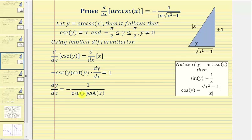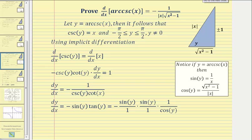Because one over cosecant y equals sine y, and one over cotangent y equals tangent y, we can write dy/dx as negative sine y times tangent y. Since tangent y equals sine y over cosine y, we can write this product as negative sine y times sine y over cosine y.